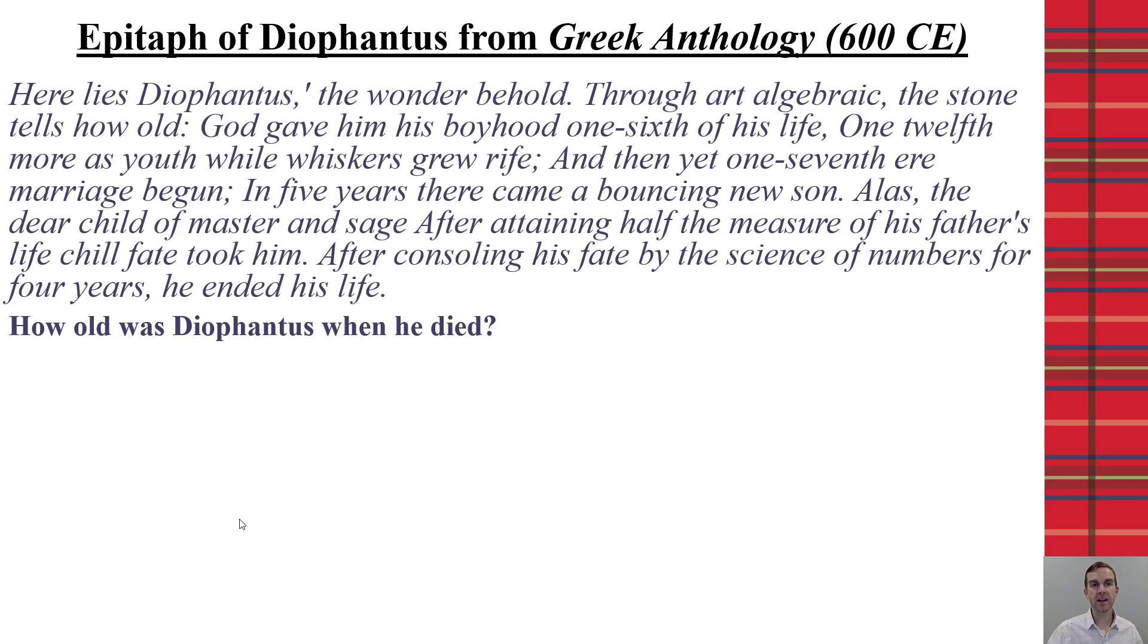So, we don't know as much about Diophantus as we may want, but they find in the Greek anthology from 600 CE an epitaph for his life that talks about how old he was. And it says that here lies Diophantus, the wonder behold. Through art algebraic, the stone tells how old. God gave him his boyhood one-sixth of his life, one-twelfth more as youth, while whiskers grew rife. And then yet one-seventh, ere marriage begun, in five years there began a bouncing new son. Alas, the dear child of master and sage, after attaining half the measure of his father's life, chill fate took him. After consoling his fate by the science of numbers, for four years he ended his life.